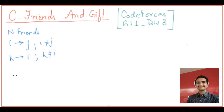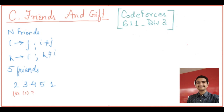Let me take an example for clarity. Let's say we have five friends. The constraint is: person one gave the gift to two, person two gave it to three, person three gave it to four, person four gave it to five, and person five gave it to one. As you can see, each person got exactly one gift.